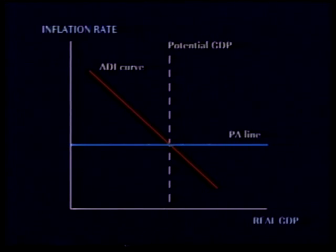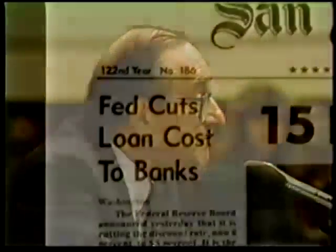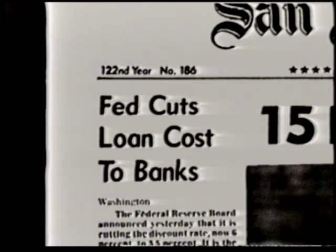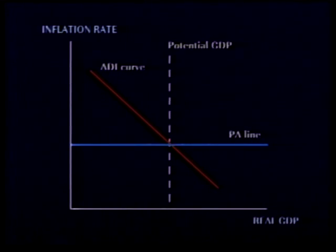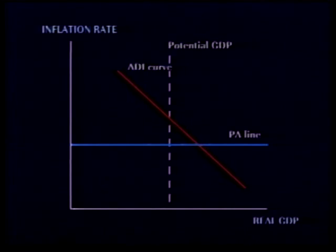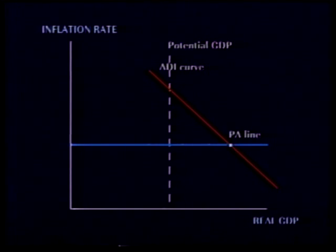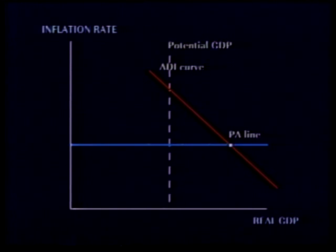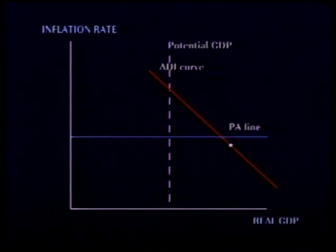Now let's see how the graph can be used to explain economic fluctuations. For example, suppose the Fed responds to political pressure by lowering interest rates, even though the inflation rate has not changed. As we've seen, a drop in interest rates leads to an increase in real GDP. The ADI curve shifts to the right. With real GDP now greater than potential GDP, inflation begins to rise. This moves the PA line upward.